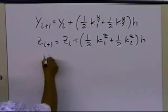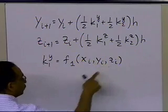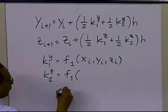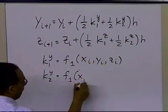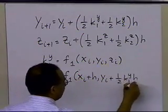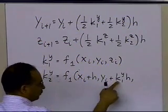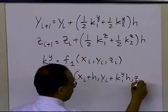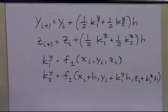k1^y = f1(x_i, y_i, z_i), and k1^z = f2(x_i, y_i, z_i). Then k2^y = f1(x_i + h, y_i + k1^y·h, z_i + k1^z·h), and k2^z = f2(x_i + h, y_i + k1^y·h, z_i + k1^z·h). It's very important to make the distinction between the two sets of k values so that you do it correctly.